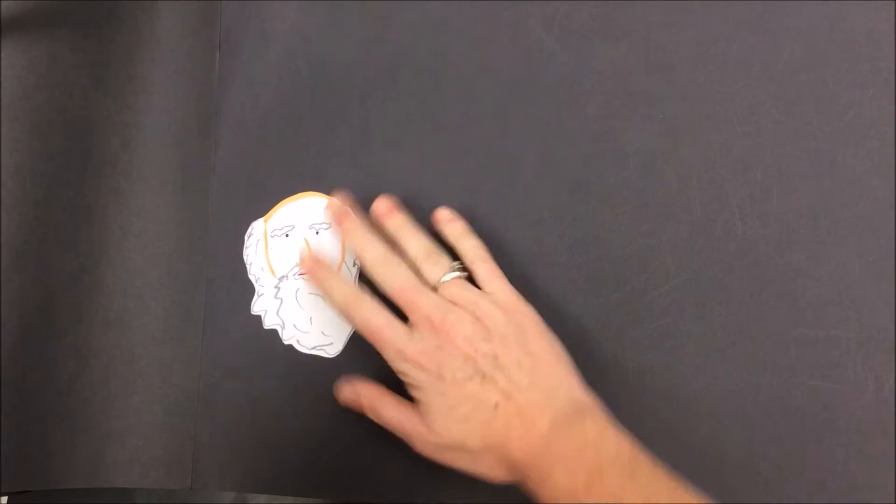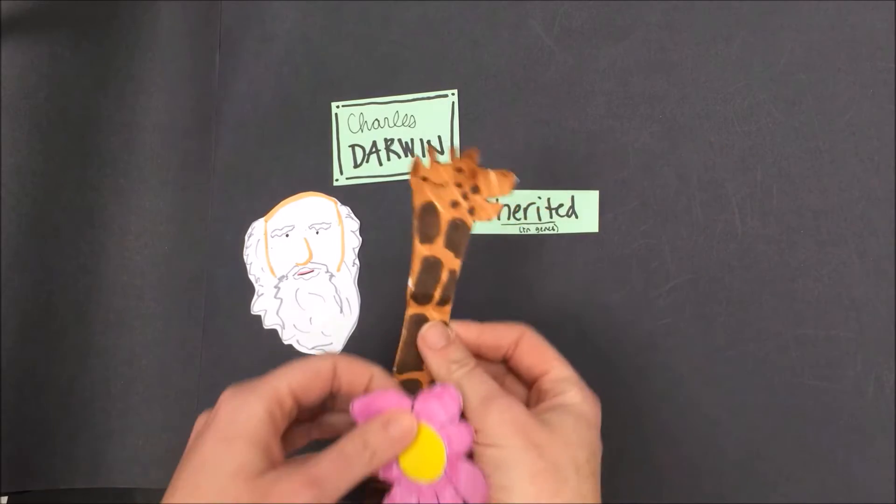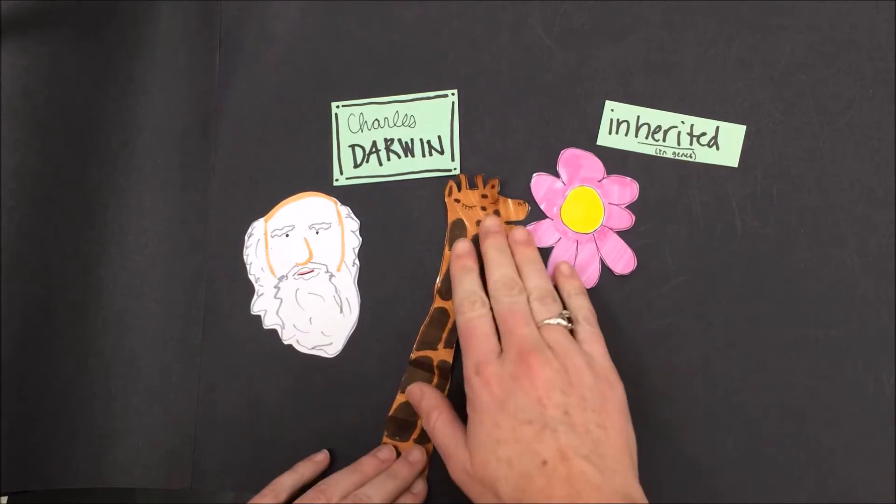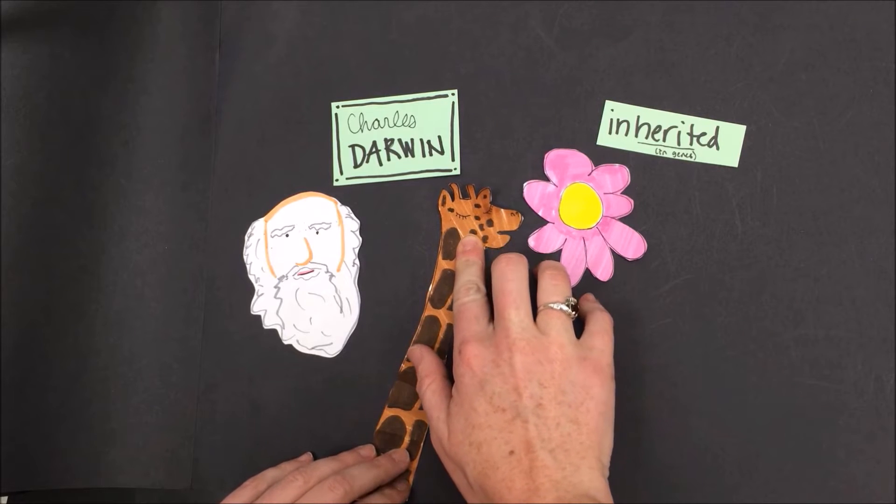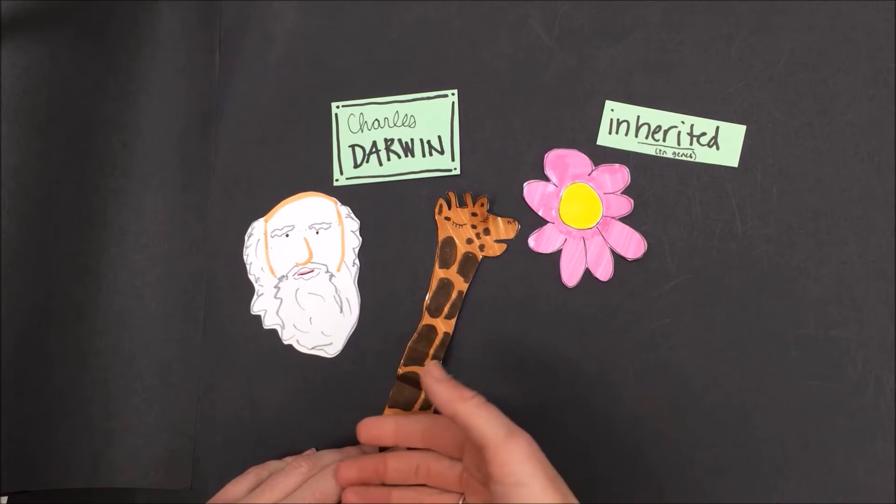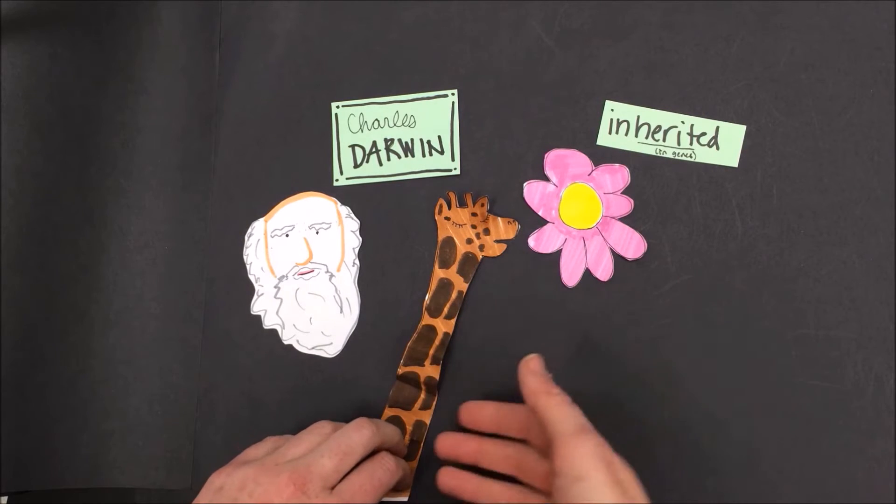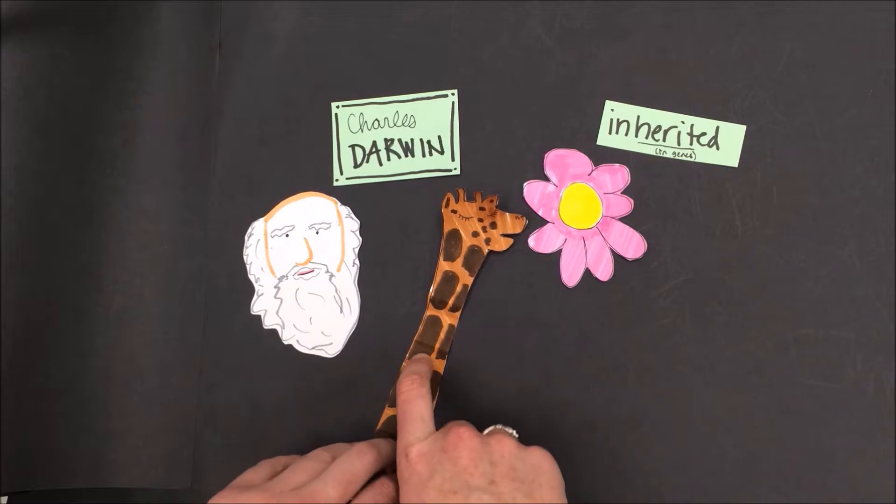Years later, another scientist came on the scene who disagreed with what Lamarck said. His name was Charles Darwin. Charles Darwin believed that new species arose in a different way, through inherited traits. His example using giraffes would say that some giraffes had short necks and some giraffes had long necks, but the ones that were best suited for their environment, or the ones with longer necks that could reach more food, were more likely to successfully reproduce and pass their traits onto their offspring. Internal desire had nothing to do with it.